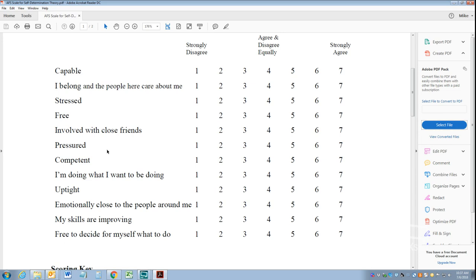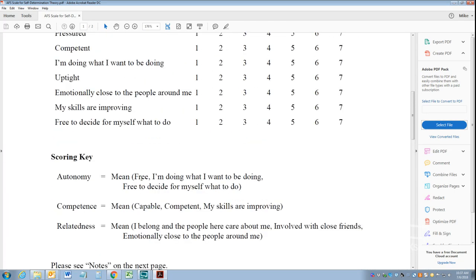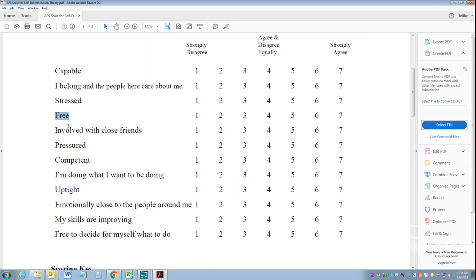And what he did is he created a scale called the Activity Feeling States Scale and looks at how a person feels about any given situation. So according to him, you can replace this with whatever activity you want. Coming to work, completing this class, completing this assignment, waking up in the morning, checking the mail, mowing the yard, any of those things. You can replace this with any activity and ask him how it makes him feel. When you do that, then they answer these from one to seven, one being strongly disagree, seven being strongly agree. And at the end of the day, you can score these according to autonomy, competence, and relatedness.